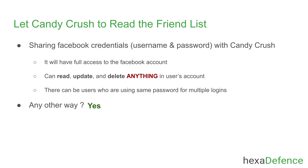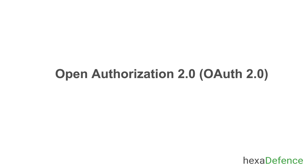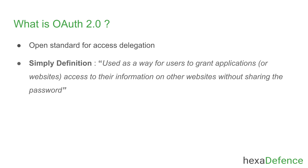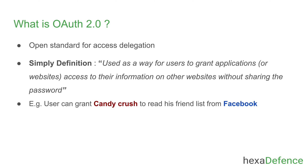The answer is yes — Open Authorization comes to the rescue at this time. Here we are only talking about Open Authorization 2.0 because Open Authorization 1.0 is deprecated now. Open Authorization is the open standard for access delegation. In simple words, Open Authorization is used as a way for users to grant applications or websites access to their information on other websites without sharing the password. So in our scenario, the user can grant Candy Crush permission to read his friend list from Facebook.